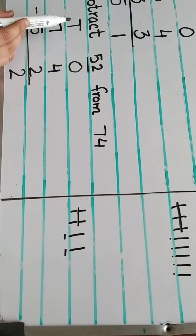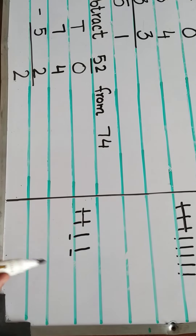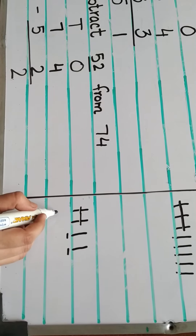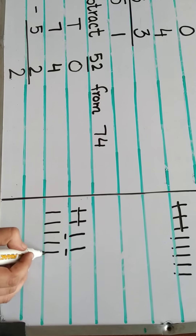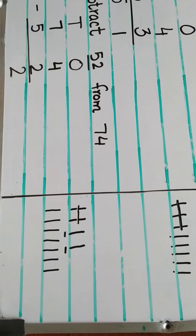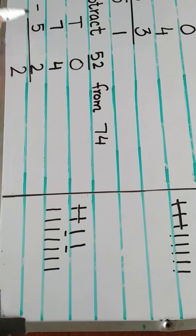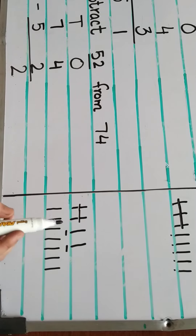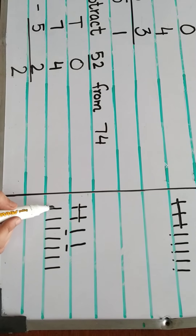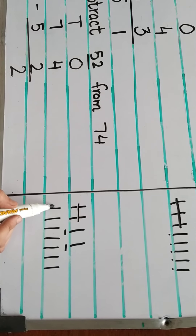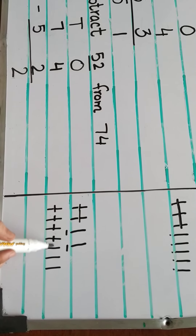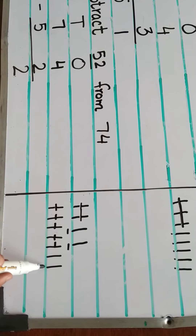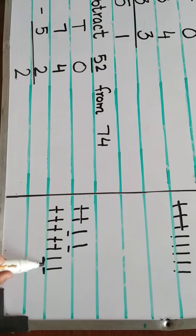In the tens column the first number is 7. Draw 7 lines: 1, 2, 3, 4, 5, 6, 7. How many do we need to separate from 7? 5. We need to separate 5: 1, 2, 3, 4, 5. Count the ones left: 1, 2.